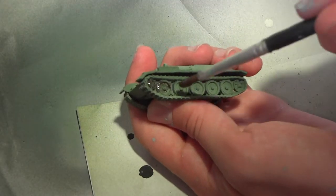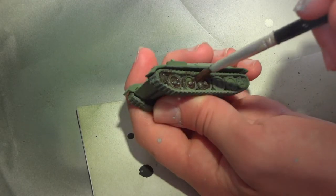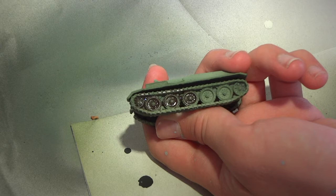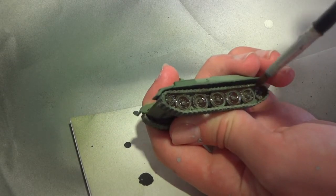Vallejo Umber Shade is then applied to the wheels inside the tank tracks. This is going to create a nice, dark, dirty, messed up kind of effect. This is not for shading, as the wheels have already been highlighted. It's just for weathering purposes.